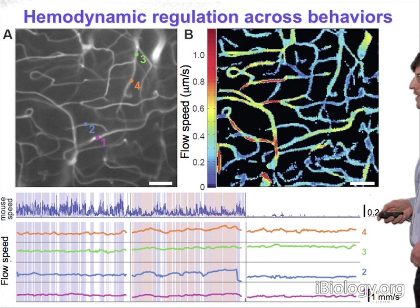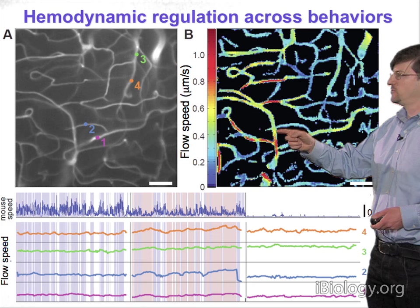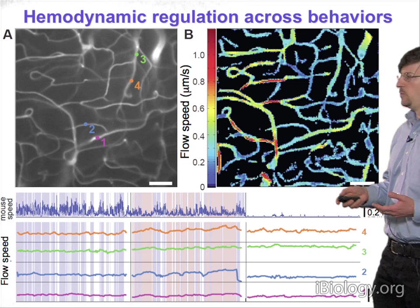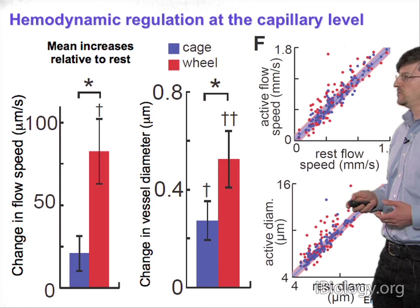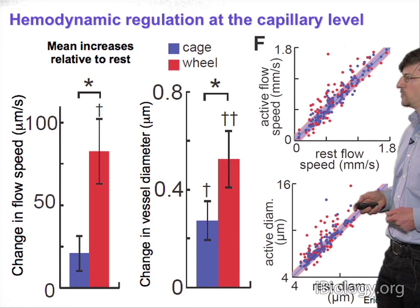From such data, one can extract the speeds at which red blood cells pass through individual capillaries and track these flow speeds across different behavioral states — sitting still, walking, or running. Interestingly, the data revealed not only changes in mean flow speed and vessel diameter, but also an unexpected level of heterogeneity across the optical field in the cerebellar cortex. Only about 30% of vessels were regulated in this fashion as the animal transitioned from resting to walking to running.